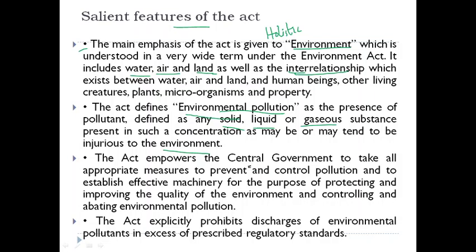The act empowers the central government to take all appropriate measures to prevent and control pollution and to establish effective machinery for protecting and improving the quality of the environment and controlling and abating environmental pollution. This act gives broad powers to the central government for protecting the environment, allowing it to take measures and formulate mechanisms for environment protection. The act explicitly prohibits the discharge of environmental pollutants in excess of prescribed regulatory standards.